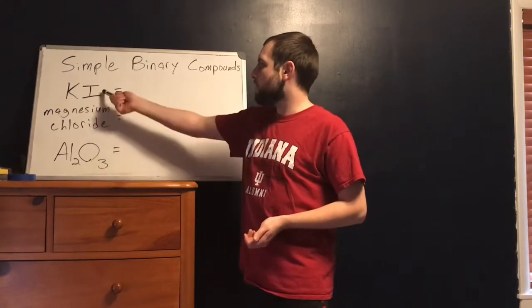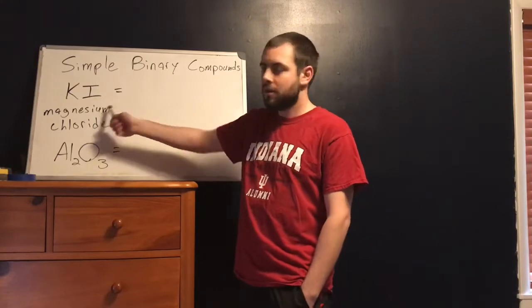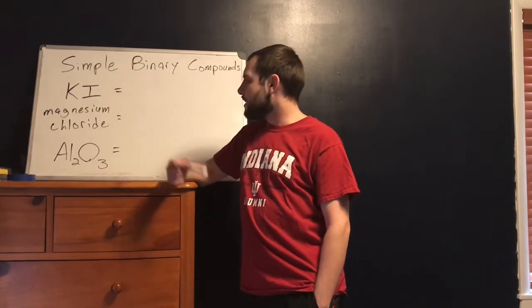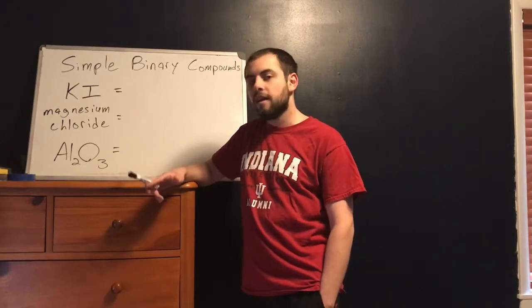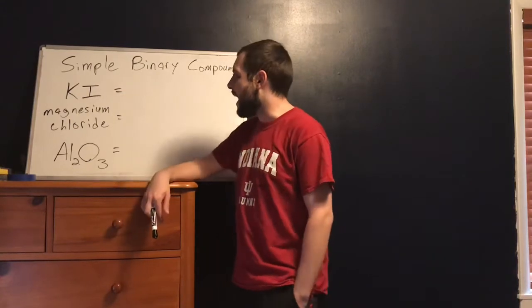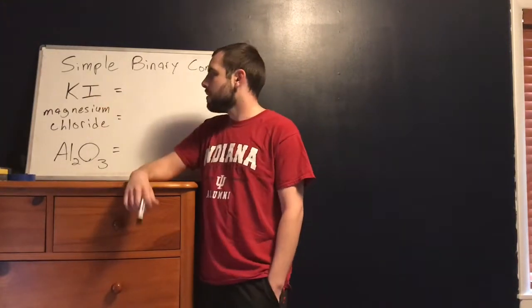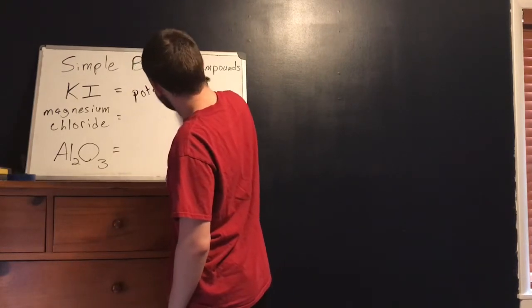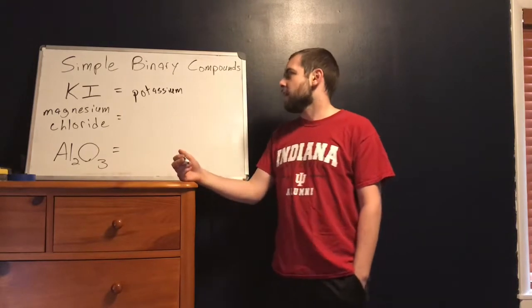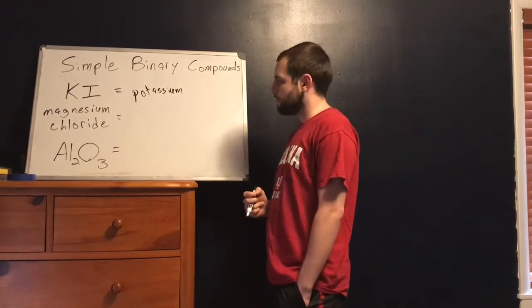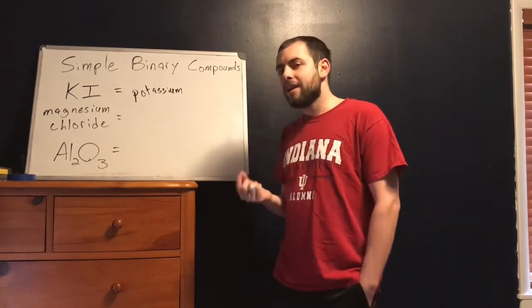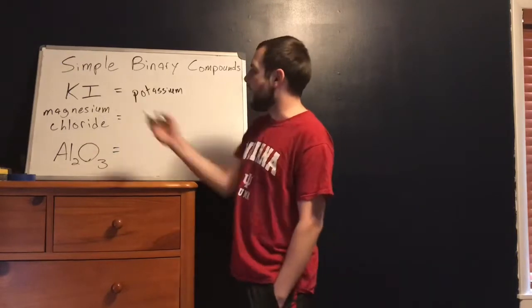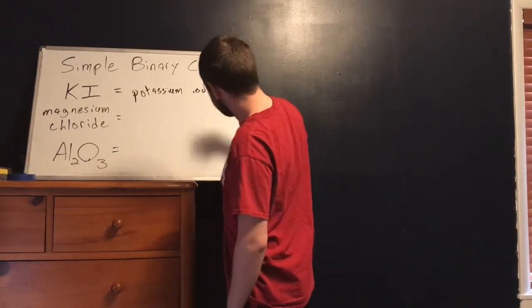We need to go from a formula to a name and also from a name to a formula. This first one: KI. My cation is potassium — potassium generally has a charge of plus one. For my cation I put potassium. And then for my anion, my anion this time is iodine. But when I'm naming ionic compounds, I don't end in I-N-E, iodine — I'm going to change that to I-D-E, iodide. So KI is potassium iodide.